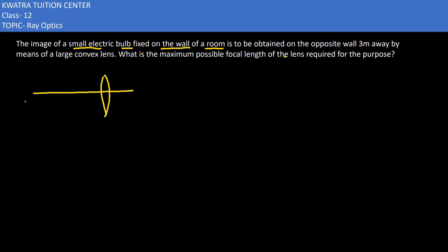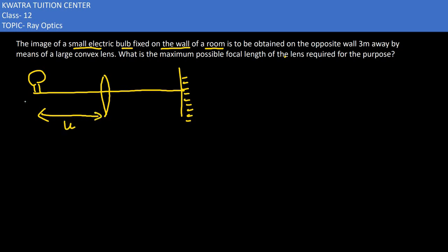Now we have a convex lens and we have a wall. The object is a small electric bulb. The distance from wall to wall is 3 meters. So we have v equal to 3 minus u, that is, v equals total distance minus u.